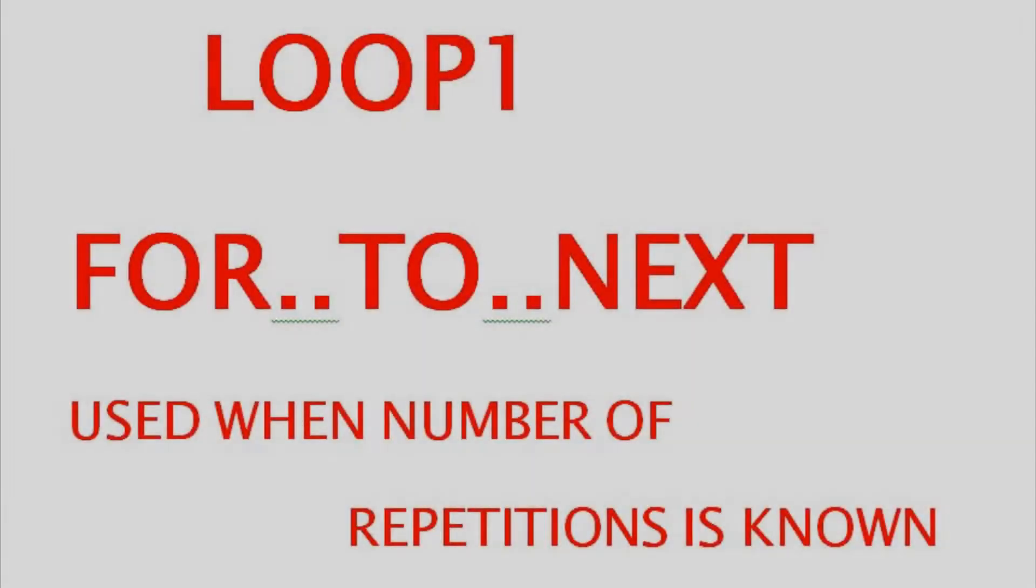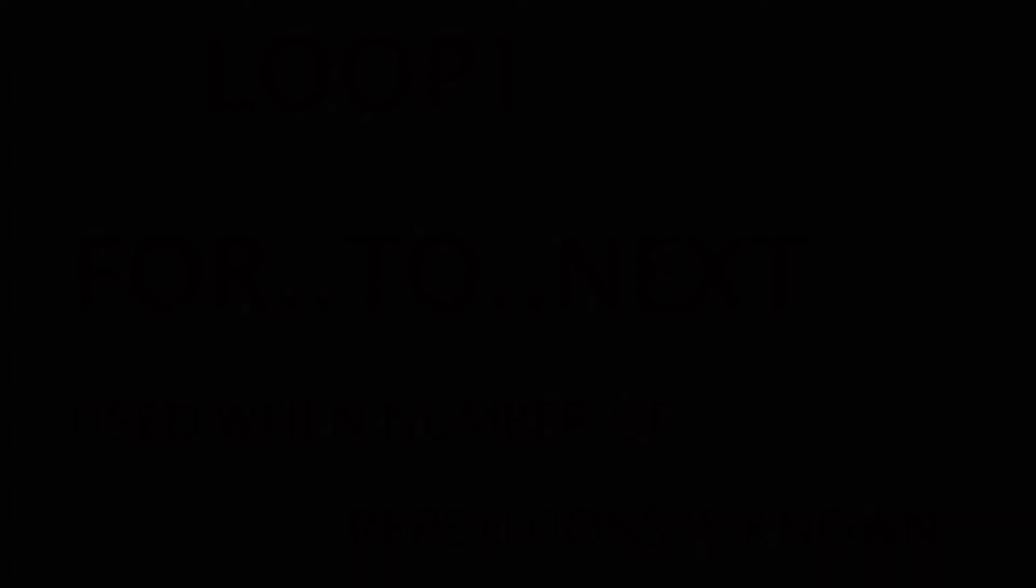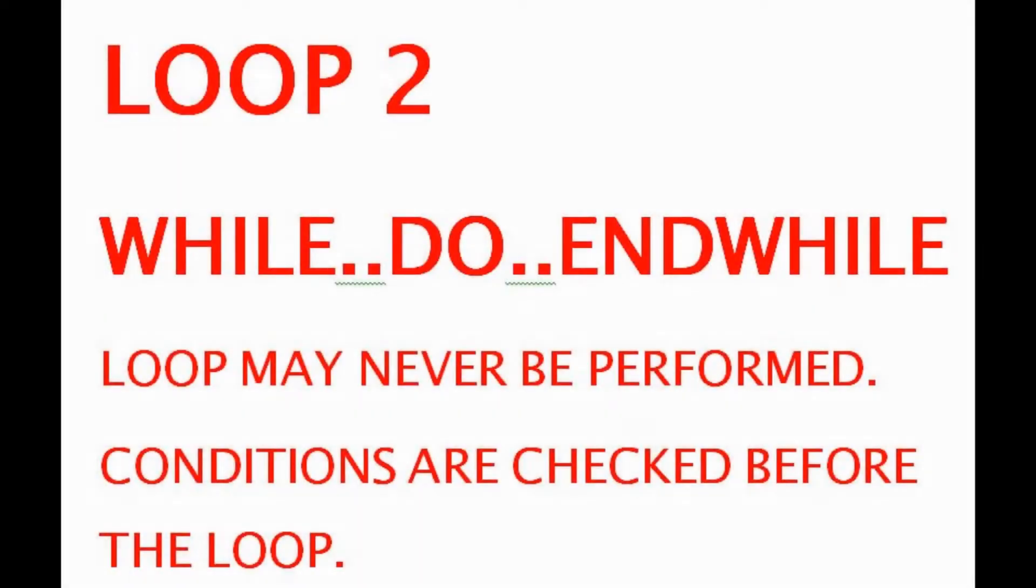There are three loops in pseudocode. The first one is for-to-next, which is used when the number of repetitions is known. The next loop is while-do-while.